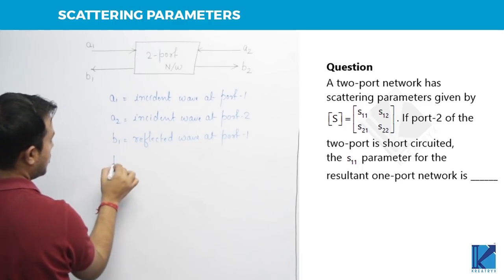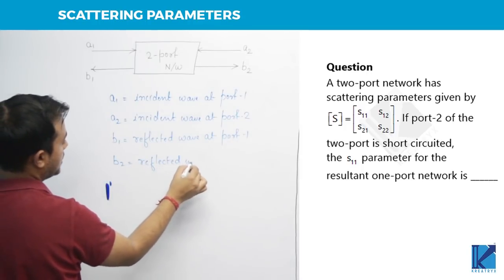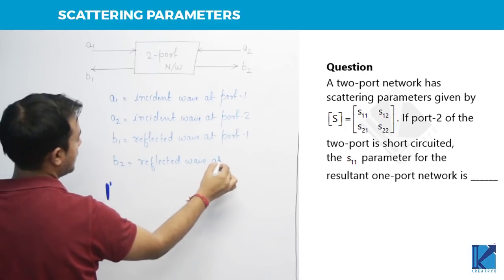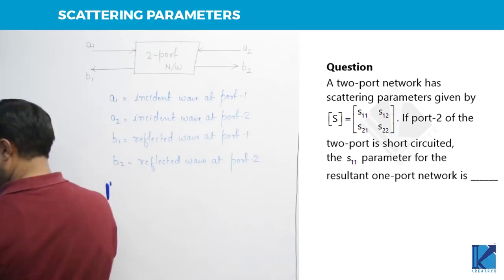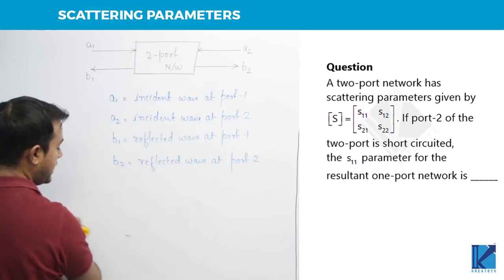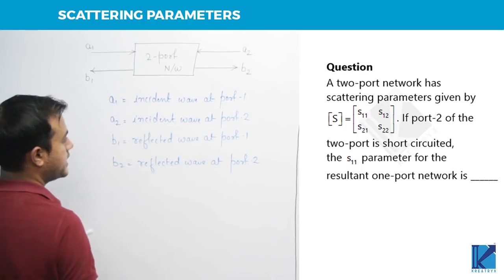B1 will be reflected wave at port 1. So B2 will be reflected wave at port 2. So B symbol represents the reflection and A is used to represent incidence.